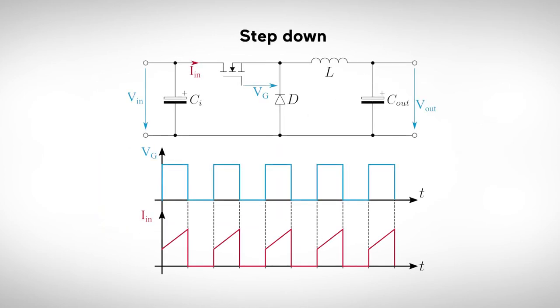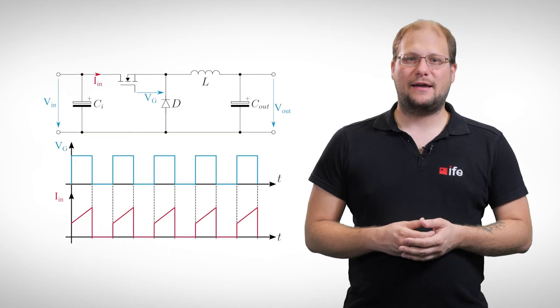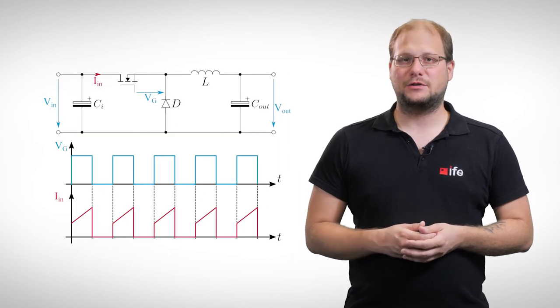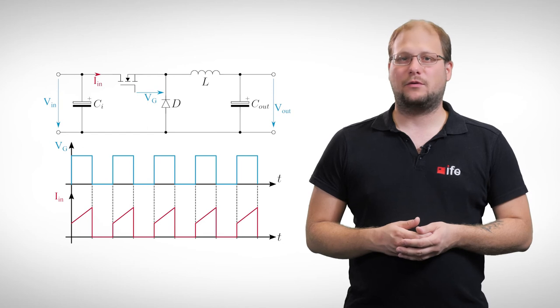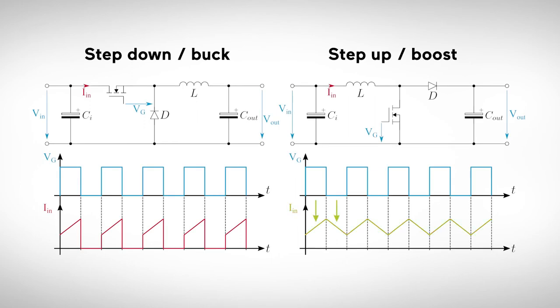For the typical step-down converter, the input current is discontinuous. This means high current during the on time of the transistor and practically no current during off time. This can produce high conducted electromagnetic emissions, which typically does not agree with the grid operator. This has led to the development of so-called power factor correction circuits, or short PFC. For the step-up converter, the input current is continuous. This is much easier to control in terms of electromagnetic interference.